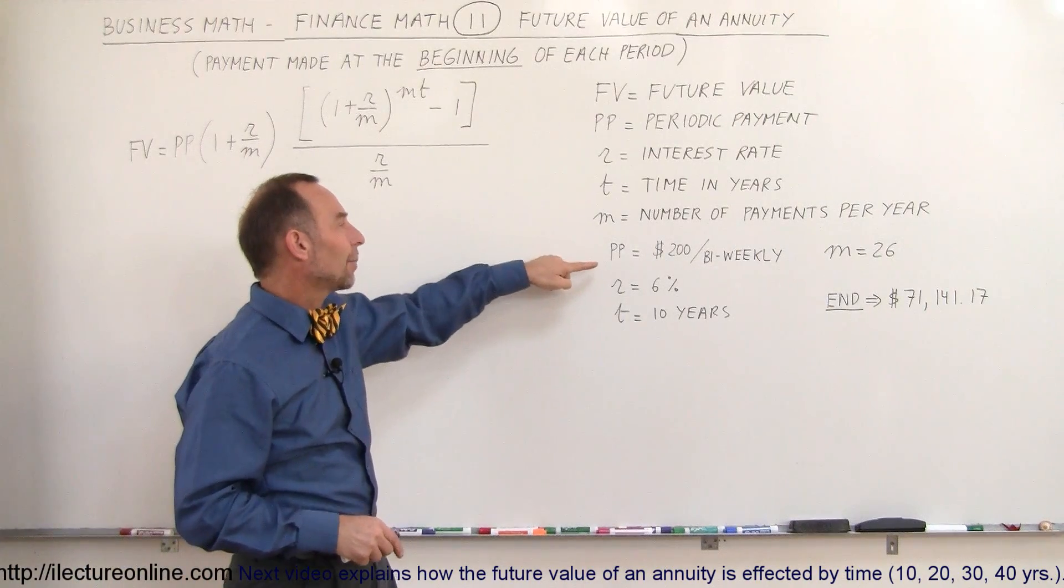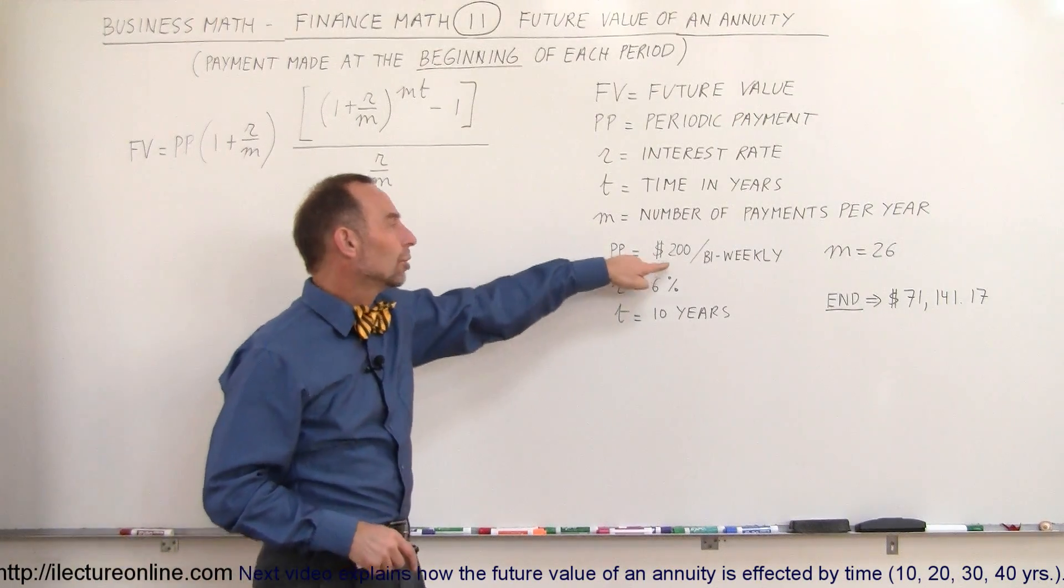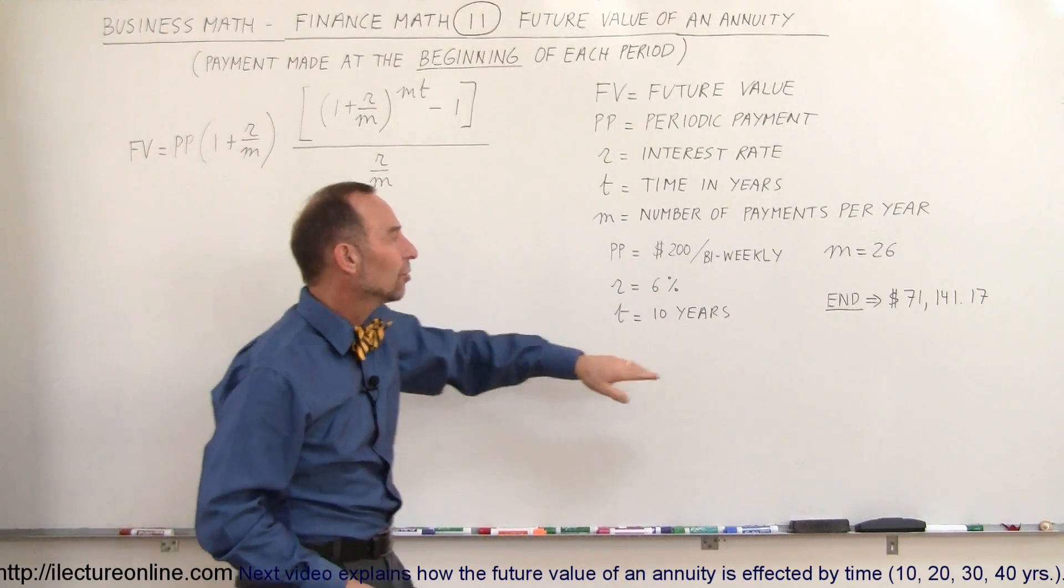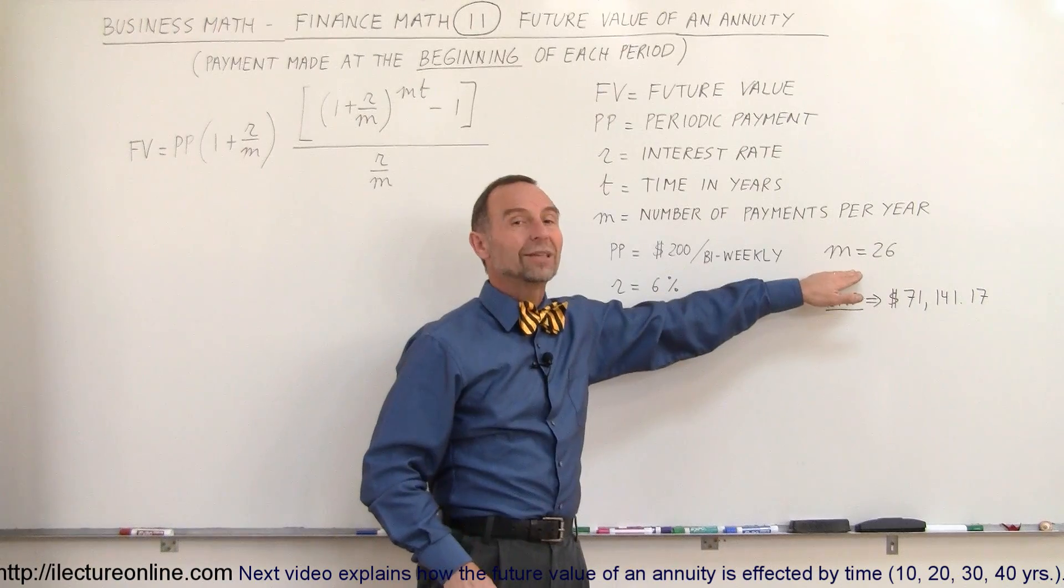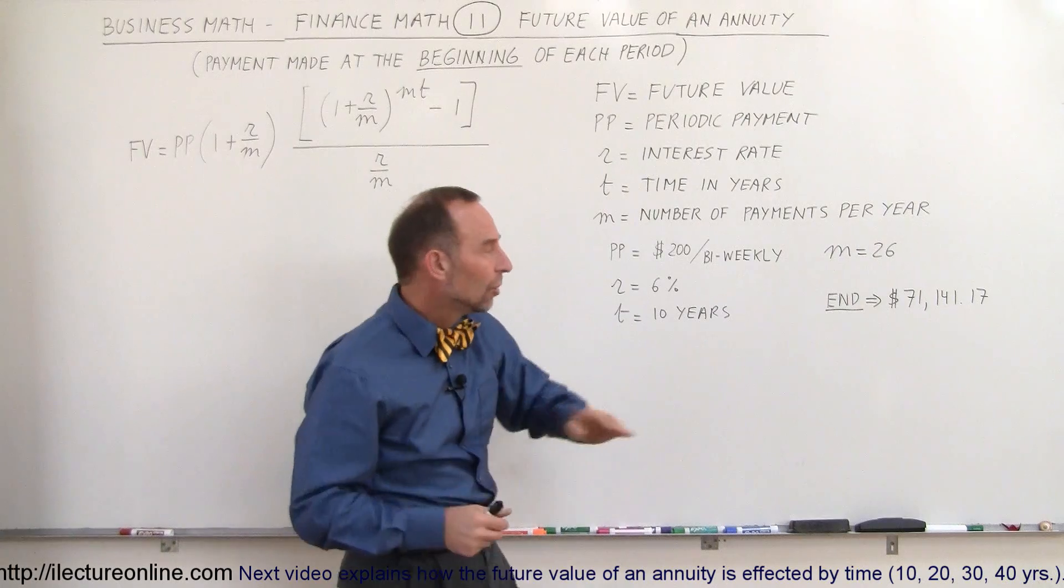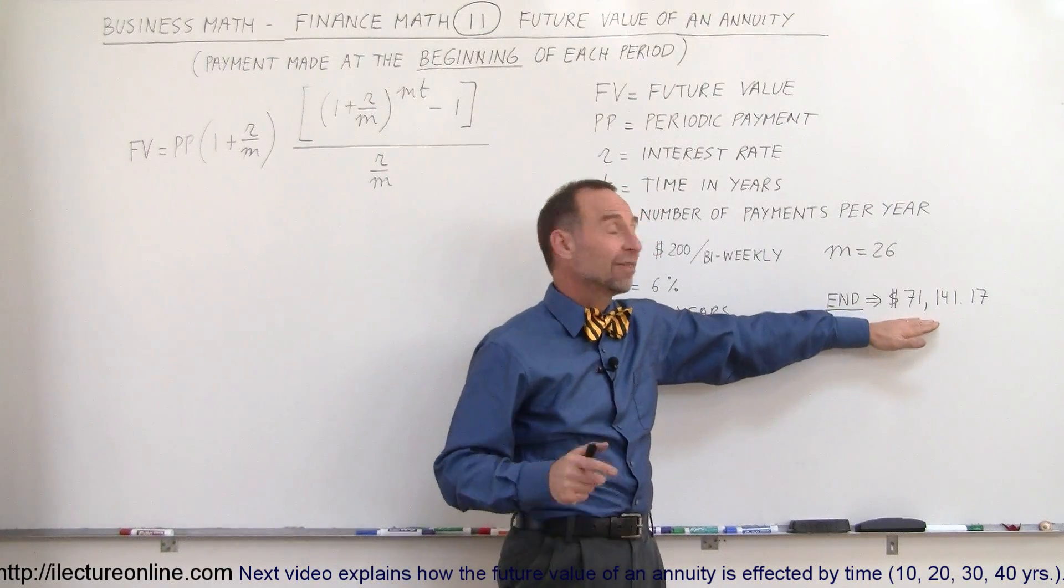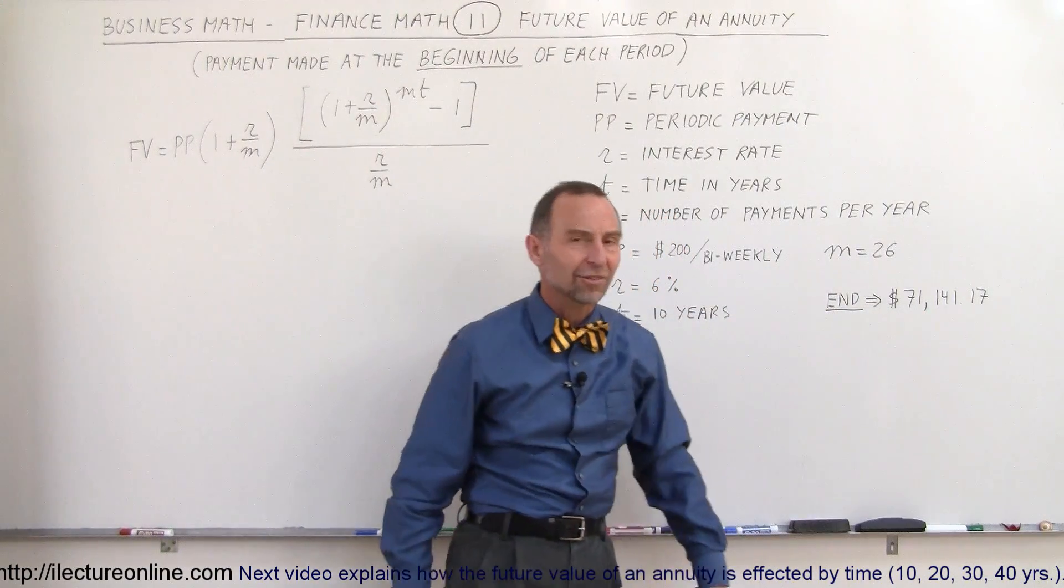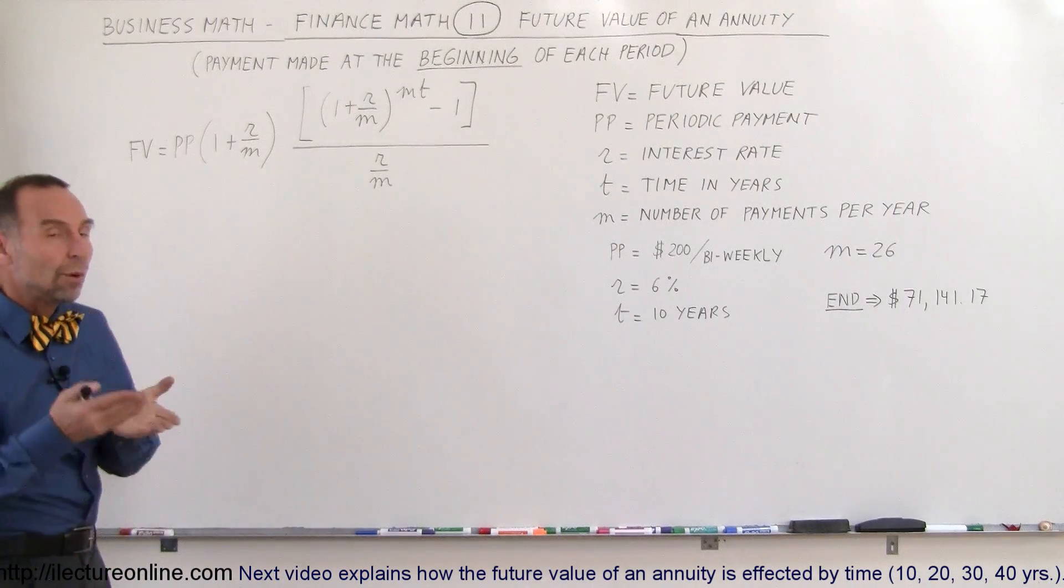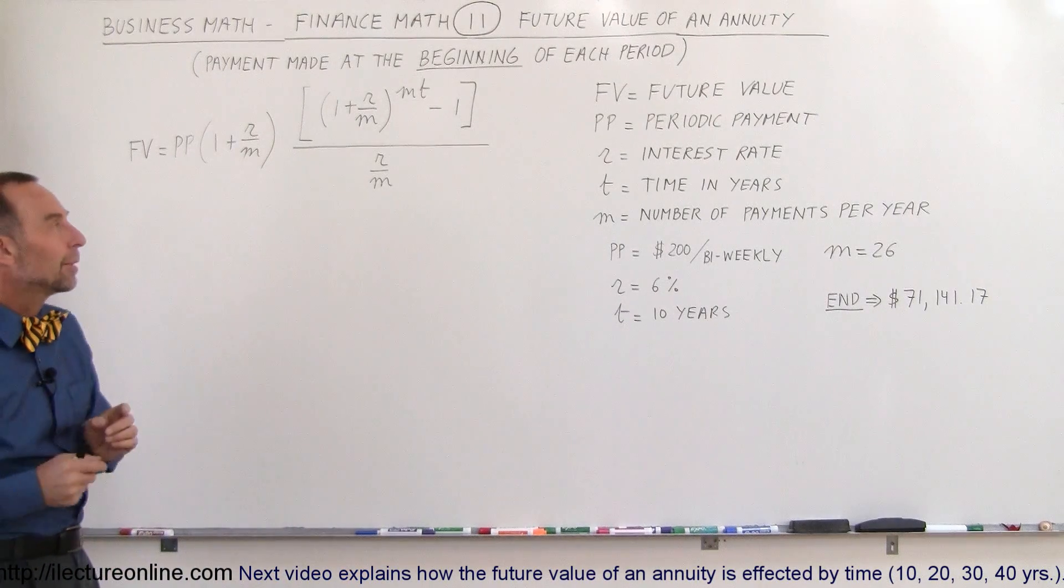And so let's say in our example that the periodic payment is $200 every two weeks, that the rate is 6%, 10 years. And so M will be 26. There's 26 pay periods per year. And in the previous video, when we made the payment at the end, the total accumulated value was $71,141.17. So let's see what it's going to be this time when we do it at the beginning of the pay period.